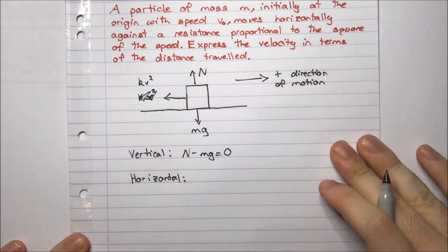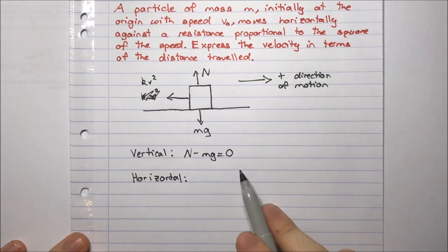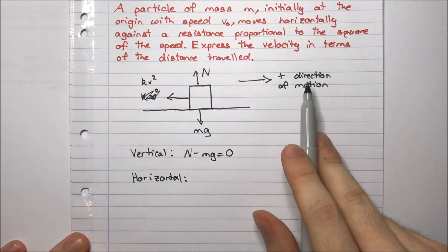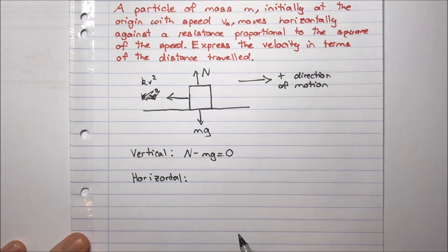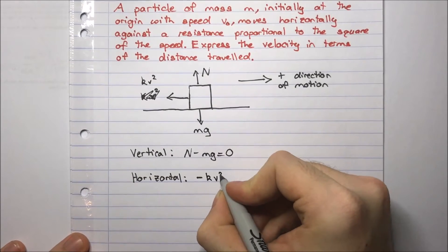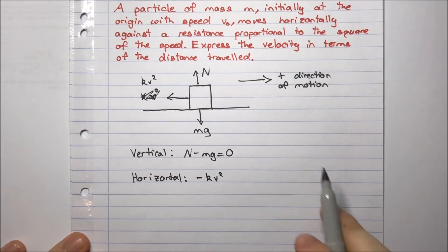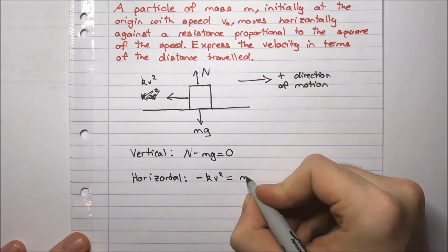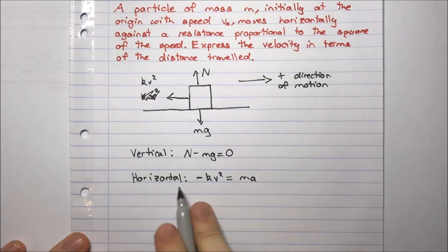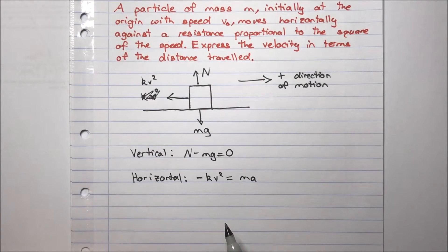Now in the horizontal direction, what do we have? We have kv squared, the force kv squared to the left, which is opposing the motion, the direction of positive motion. So we have a negative force here, negative kv squared. And since there is motion against a resistive force, that should equal mass times acceleration. So this is just Newton's law here. The sum of forces equals mass times acceleration.